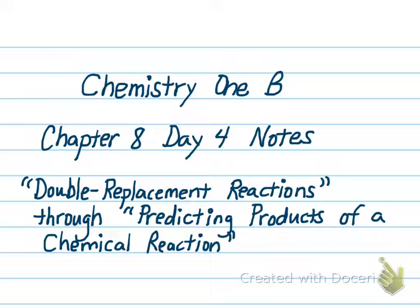By the time we're done today, you should be able to look at a chemical reaction and identify it as one of the five types of reactions. You also should be able to write and balance a chemical equation for each type of reaction, whether you are given the products or not.